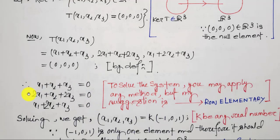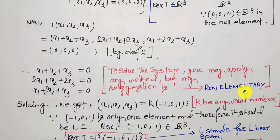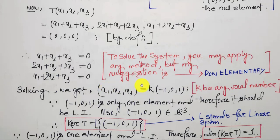Now we have to solve this homogeneous system of linear equations with three unknowns x1, x2, x3. You may apply any method such as Cramer's rule or matrix inversion, but I suggest applying the row elementary method, as it is very helpful for different problems included in your syllabus. I have not shown the procedure here as I already discussed row elementary techniques in my previous videos, so I will just write down the result.